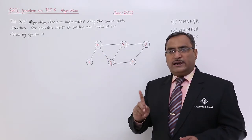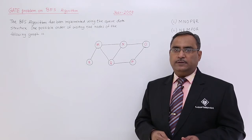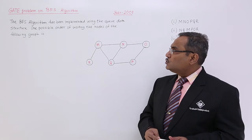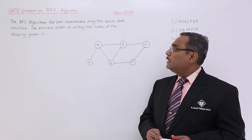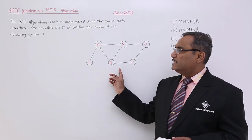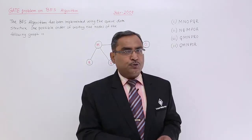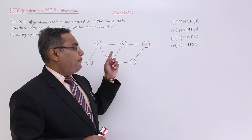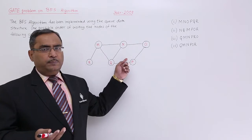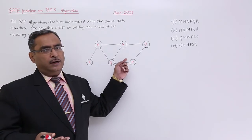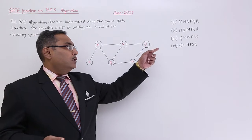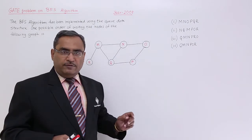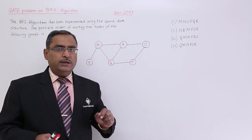In the queue data structure, it is nothing but first in first out. One possible order of visiting the nodes of the following graph is given, and we have 4 options. If we apply the BFS algorithm, it will traverse through the graph, and we need to find the order in which all 6 nodes will be traversed.